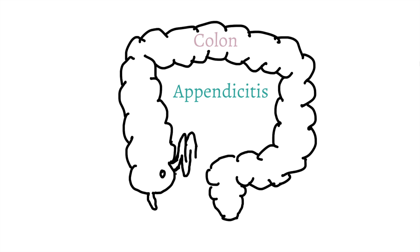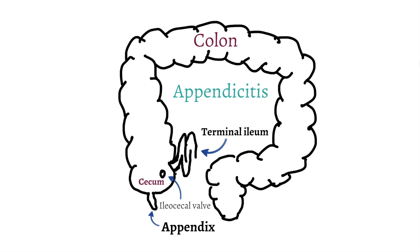The appendix is a natural diverticulum at the beginning of the colon. This area of the colon is called the cecum. Within the cecum lies the appendix and the ileocecal valve. Both the appendix opening and the ileocecal valve are used as landmarks in colonoscopy to identify when the colonoscope has reached the full extent of the colon.